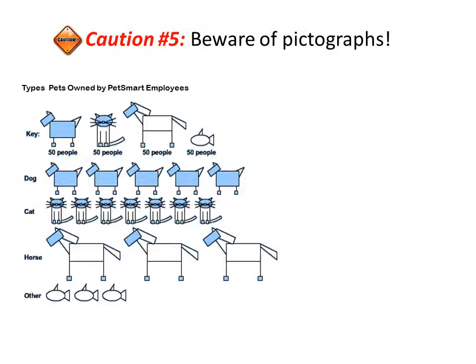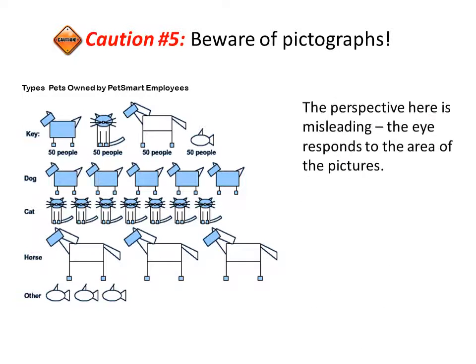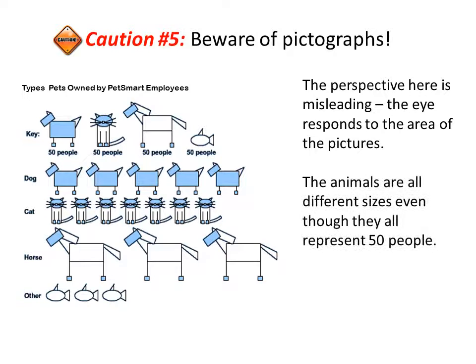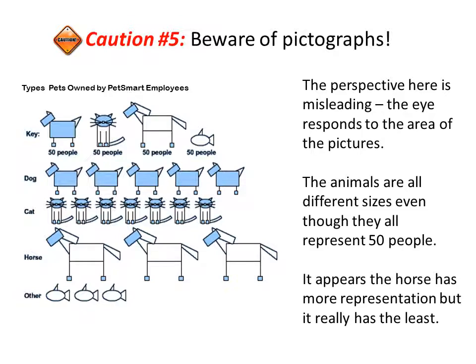For dogs, there are five dog symbols, which represents 250 people at PetSmart who own dogs. The perspective here is misleading because the eye responds to the area of the pictures, not necessarily the number they represent. The animals are all different sizes even though they all represent fifty people. So it appears that the horse has the most representation, but it really has the least. If you use a pictograph, make sure the symbol is proportional to the size it represents.